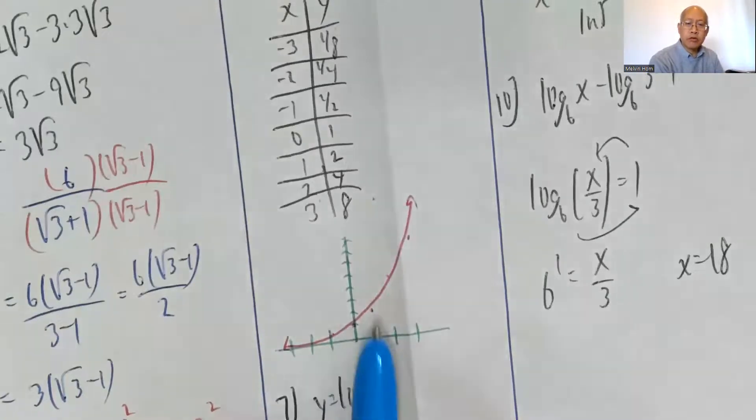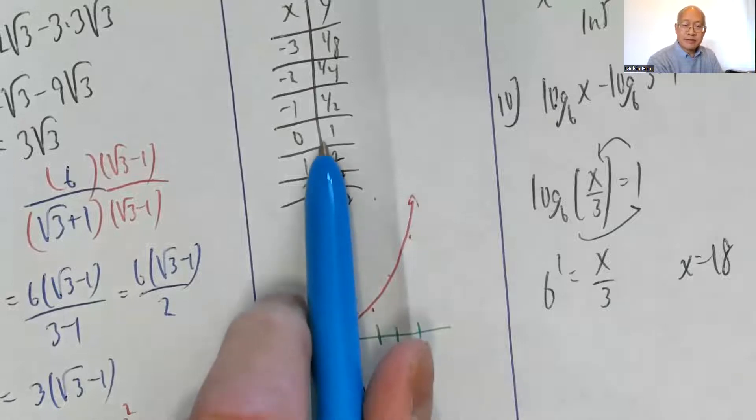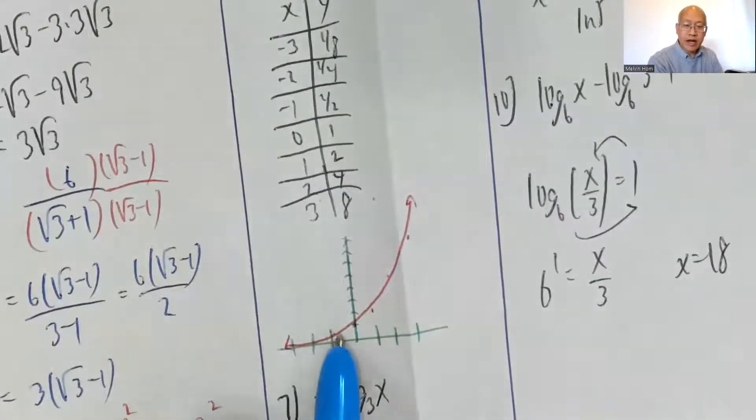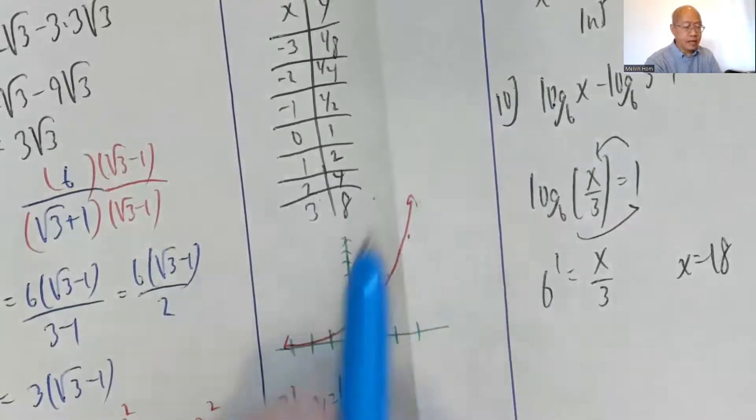So I plot the points: (0,1), (1,2), (2,4), (3,8). For negative x values, these y values are almost 0: negative 1 gives 1 half, negative 2 gives 1 fourth. After a while you just kind of have to cram it in toward the x axis. So it looks something like that.